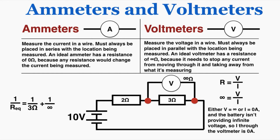I can also show that the equivalent resistance of that parallel part of the circuit — because 1 over infinity is the same as 0 — is just 3 ohms. Because the voltmeter's resistance is infinite, the equivalent resistance of the parallel section is the same as if the voltmeter weren't even there, just the 3 ohm resistor. This is why we want ideal voltmeters to behave as if they're not there, just measuring what's already present without affecting it.